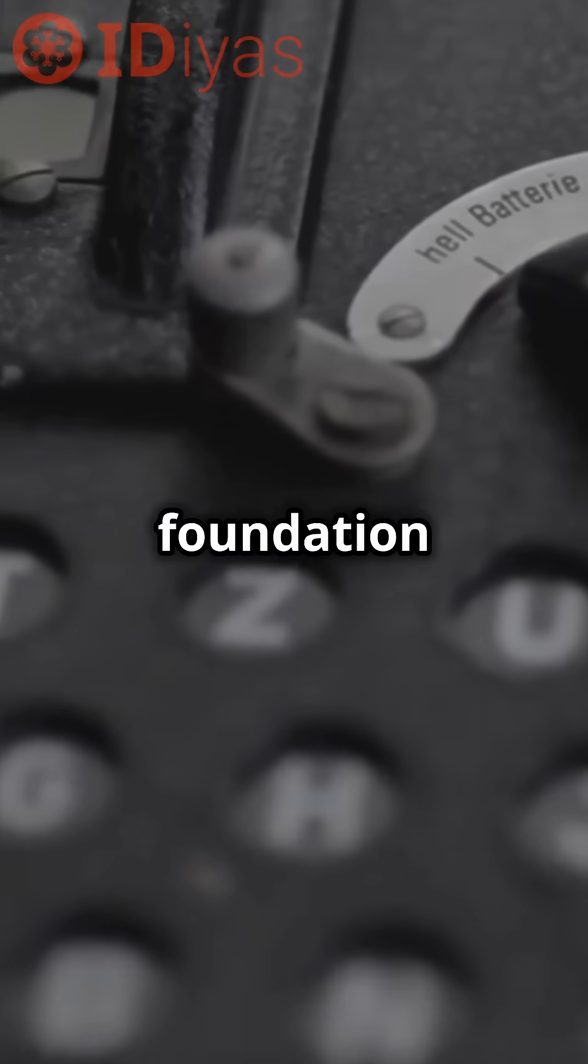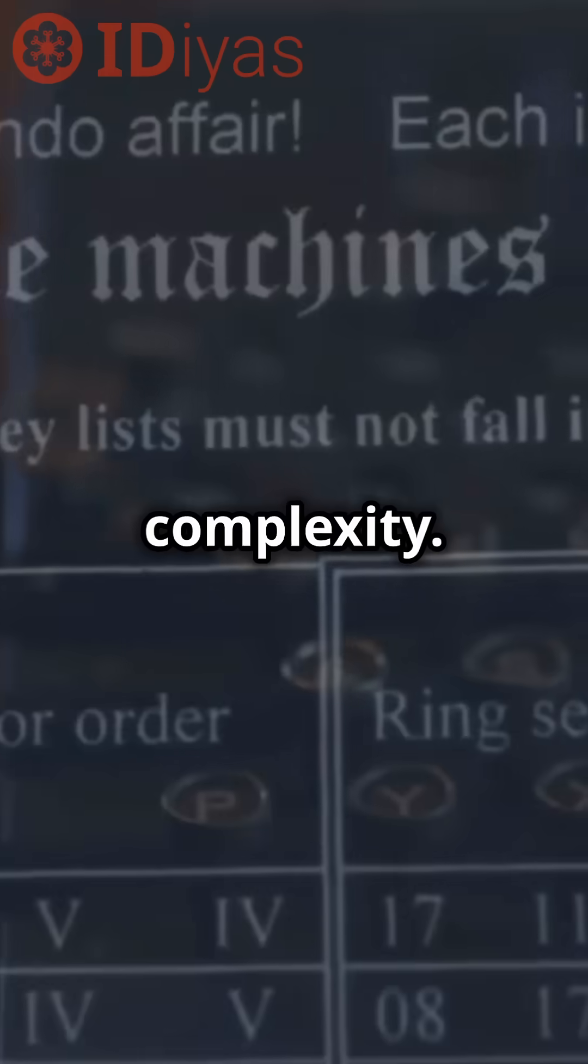In short, the Turing machine is the foundation of theoretical computer science and remains central to understanding computation, algorithms, and complexity.